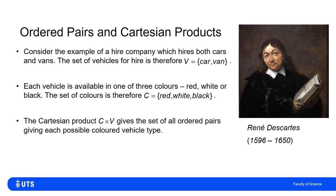But I would then be able to define the Cartesian product C × V to be the set of all ordered pairs giving each possible colored vehicle type. So C × V will tell me the color then the vehicle type: {(red, car), (white, car), (black, car), (red, van), (white, van), (black, van)}. Because I've got three choices from C and two choices from V, then C × V will have six choices - three times two choices of ordered pair.